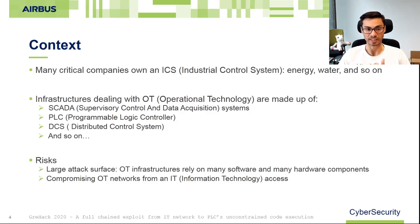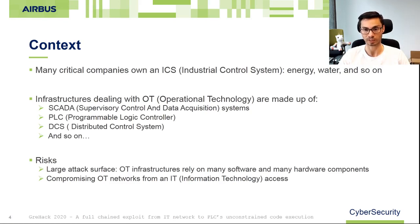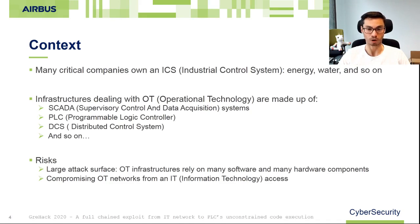Companies which own an ICS are in many critical sectors like energy, water, and so on. Such infrastructure dealing with OT is largely made up of SCADA, PLC, DCS, and so on. For a long time security wasn't taken into account because such infrastructure wasn't intended to be connected to other networks. However, systems are more and more connected together, and OT environments rely on many software and hardware components leading to a large attack surface. One of the major risks is the ability to compromise OT networks from an IT access.